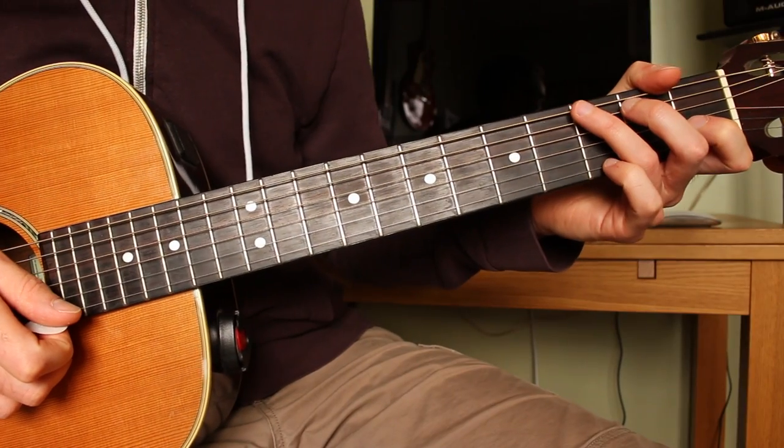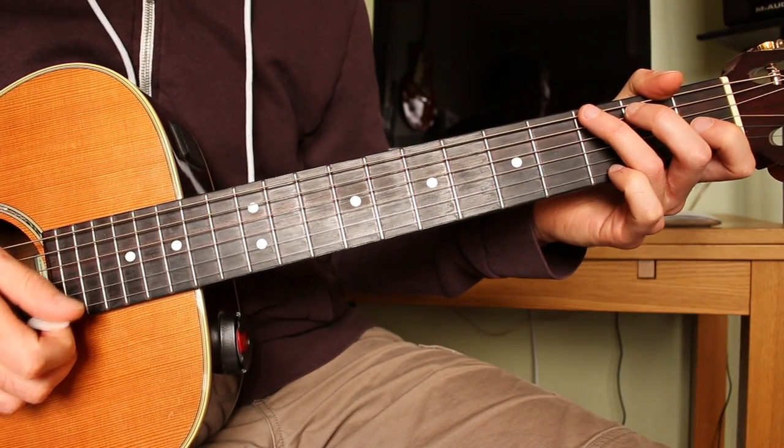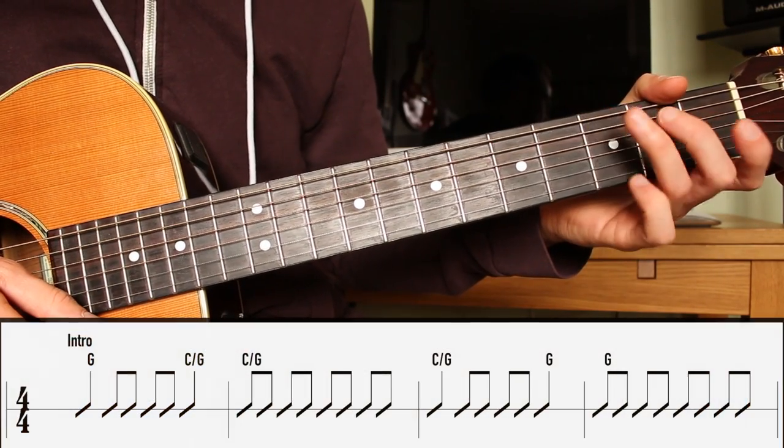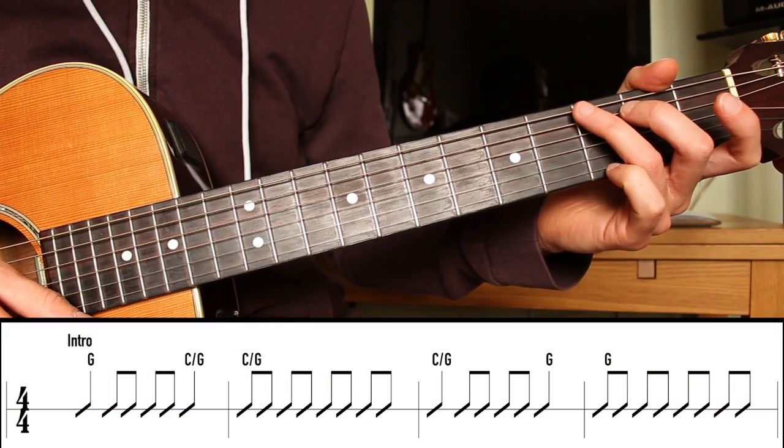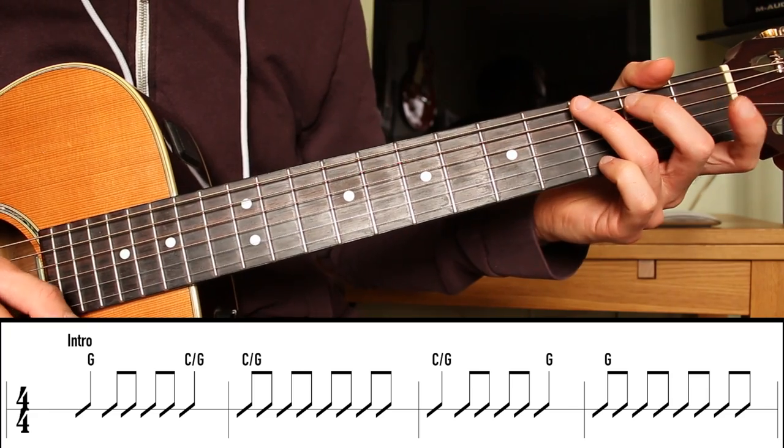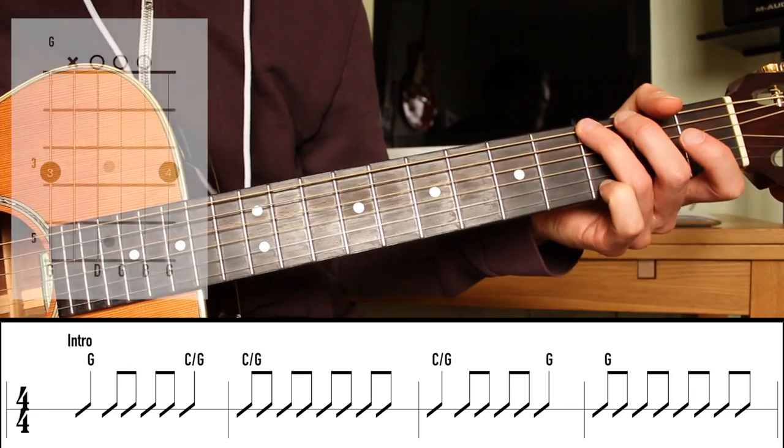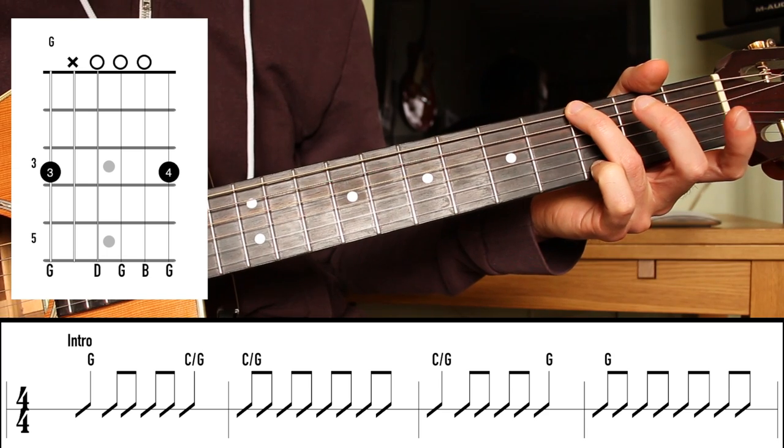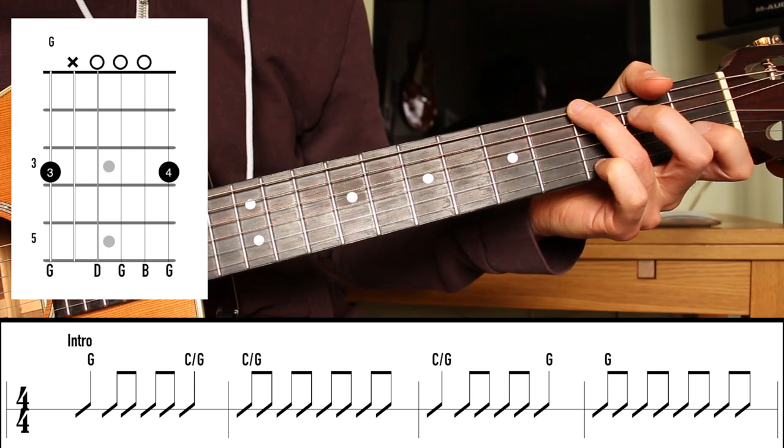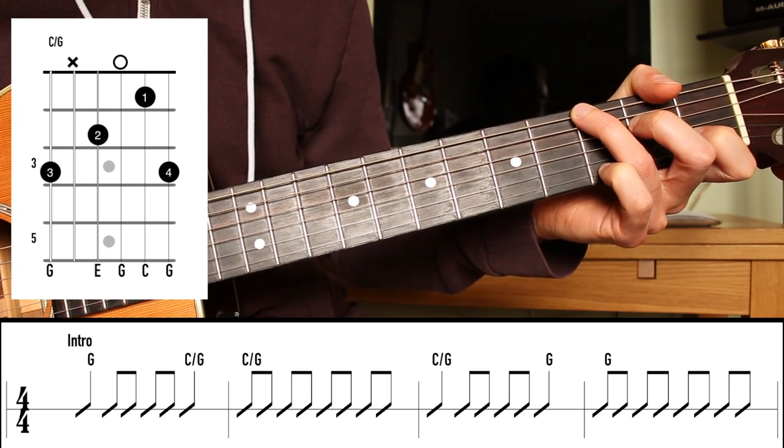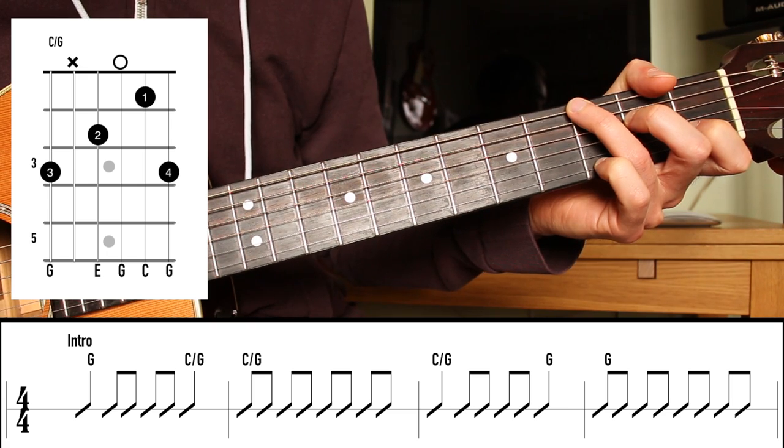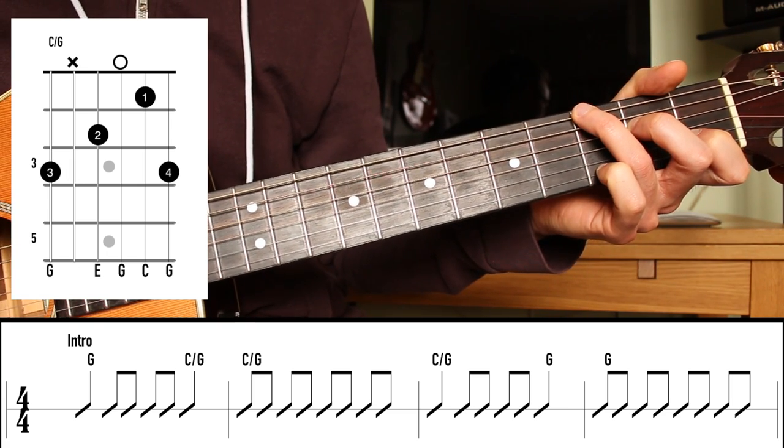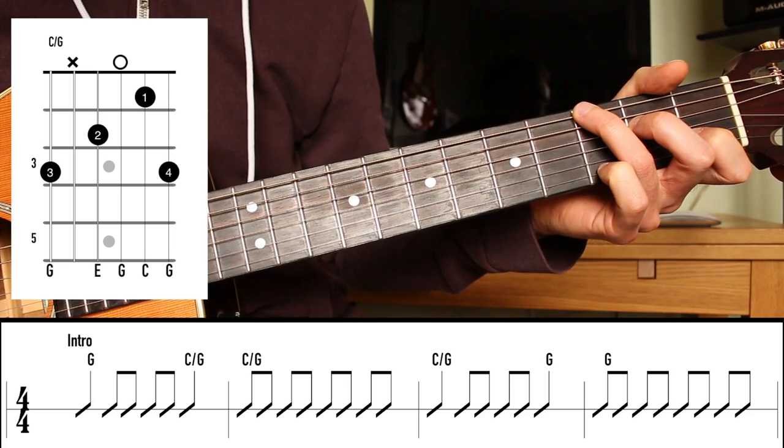So coming now onto the acoustic guitar, the tuning is the same as before. D, G, C, F, A, D. And what we have in the intro and in the verse is this nice little move going from a G chord, finger with fingers 3 and 4, because we're going to move to this, which is your C chord, but with a G bass.